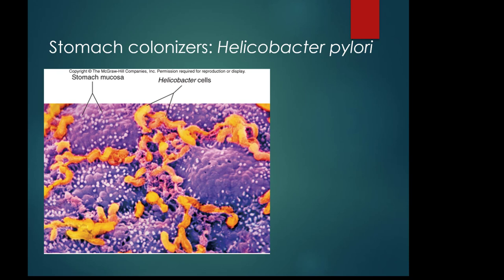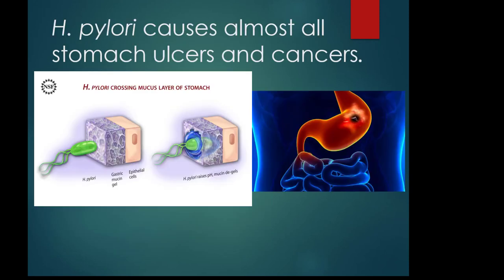The name Helicobacter reflects its shape — it kind of kinks, somewhere between a vibrio and a spirillum. Pylori refers to the pylorus region of the stomach, where the pyloric sphincter leads from the stomach out to the duodenum. Helicobacter pylori survives by secreting urease, an enzyme that breaks down urea into ammonia. Ammonia acts as a base to neutralize the surrounding acid, allowing it to survive locally. It then seeks out the least acidic part of the stomach.